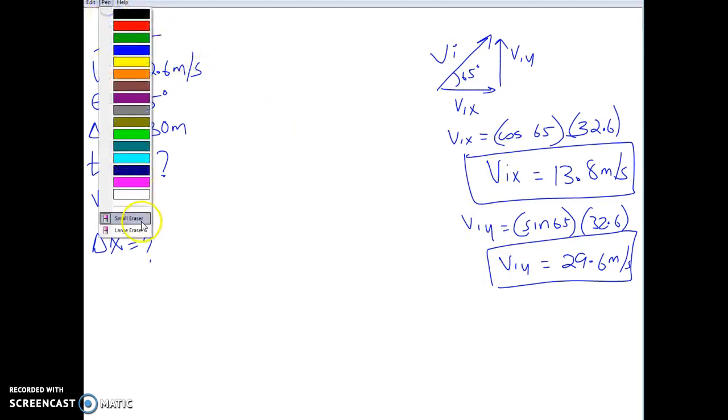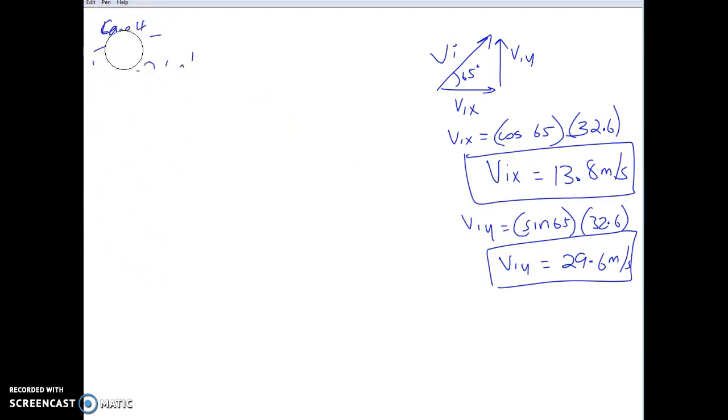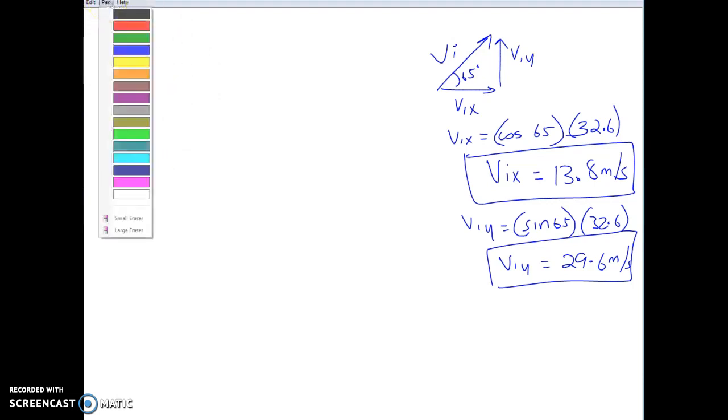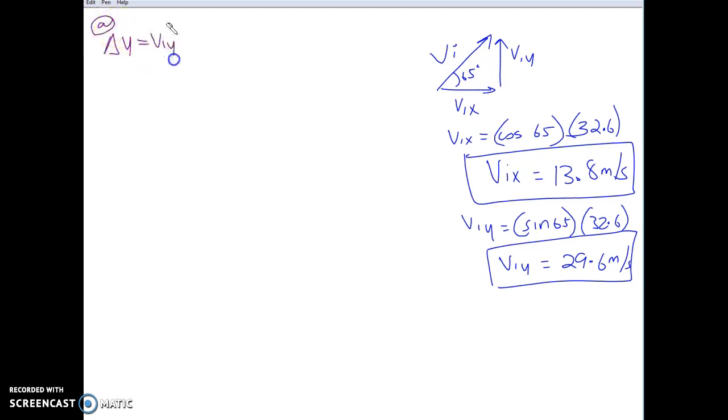And the next thing that we're going to do is take a look at our time, figure out what our time is. And again, to figure out my time, we're going to use delta Y, which equals VYt plus half at squared. Now this is 6.3 meters. And VY, of course, is 29.6t plus half times negative 9.8 times t squared. So 6.3 meters equals 29.6t minus 4.9t squared.